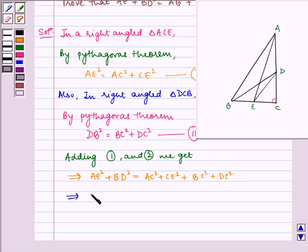It implies AE square plus BD square is equal to AC square plus BC square plus CE square plus DC square.